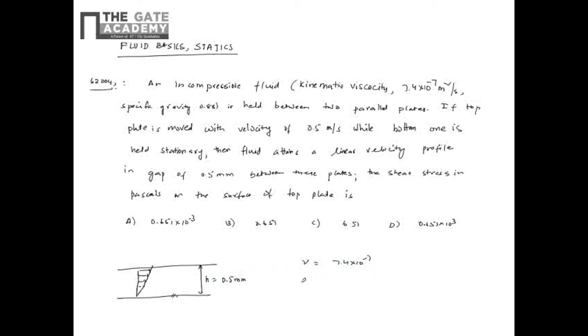Nu, the density, the specific gravity is given. The specific gravity is 0.88. So, actual density is specific gravity into the density of water which is 1000. So, 0.88 into 1000, that is 880. That is the density of the fluid. But the bottom one is stationary. The fluid attains linear velocity. The shear stress...